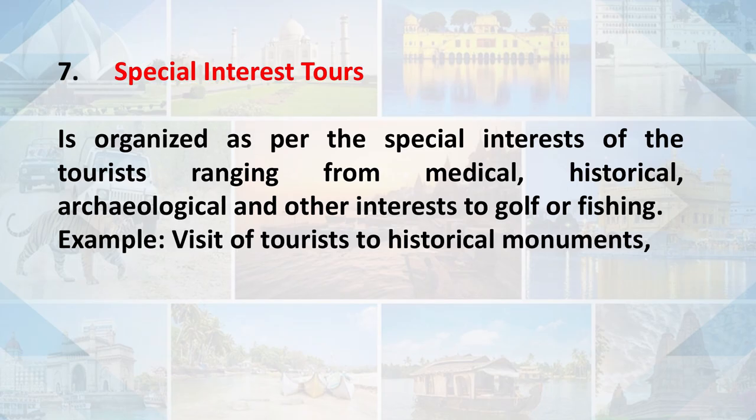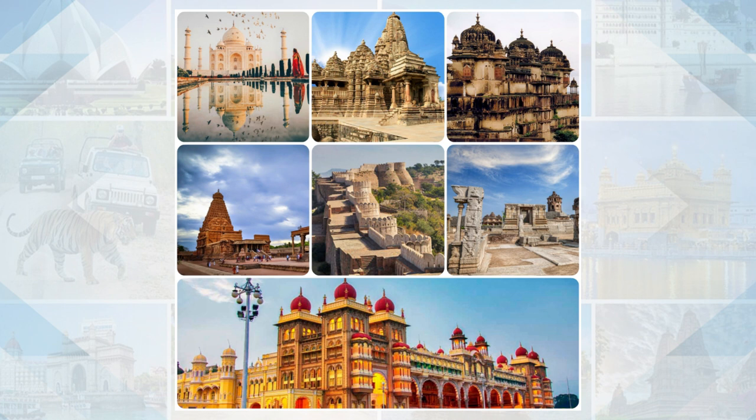The seventh type is special interest tours — organized according to the specific interests of the tourist, ranging from medical, historical, and archaeological interests to golf or fishing. For example, tourists interested in monuments want to know everything about a particular monument — its history, background, and architectural design. People interested in monuments may visit Agra to see the Taj Mahal, wanting to learn who built it and all about its architecture.